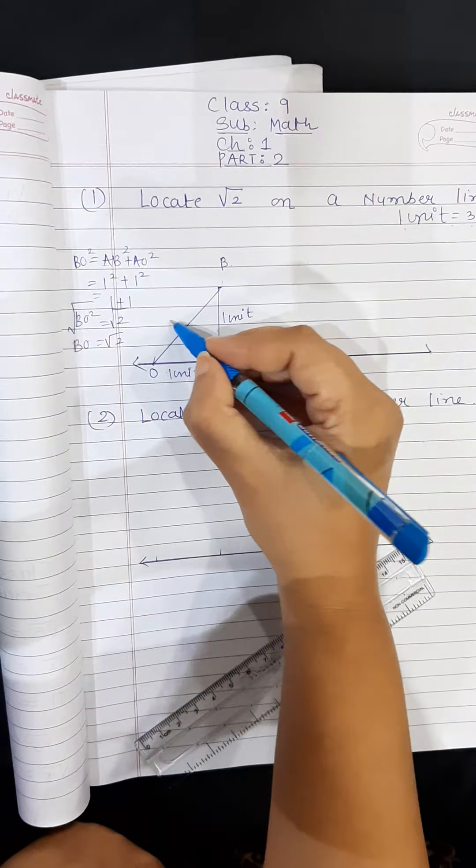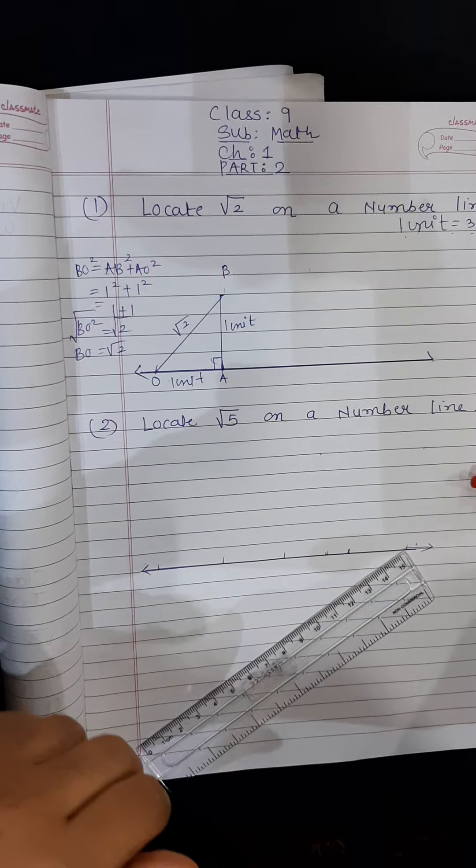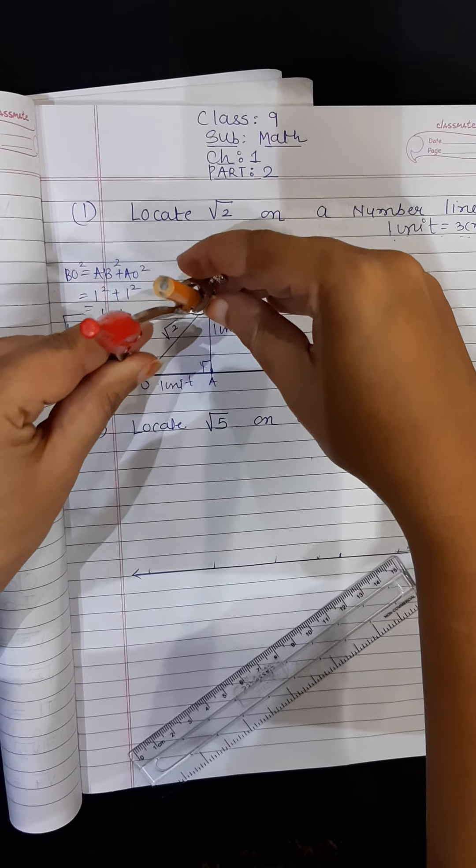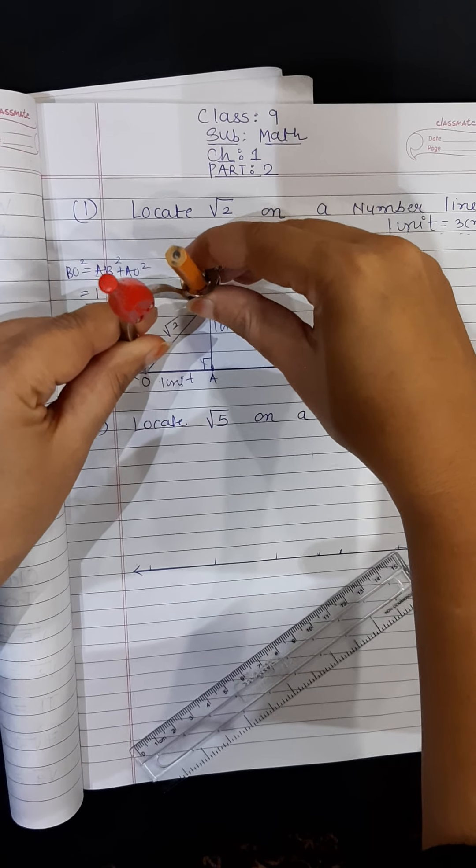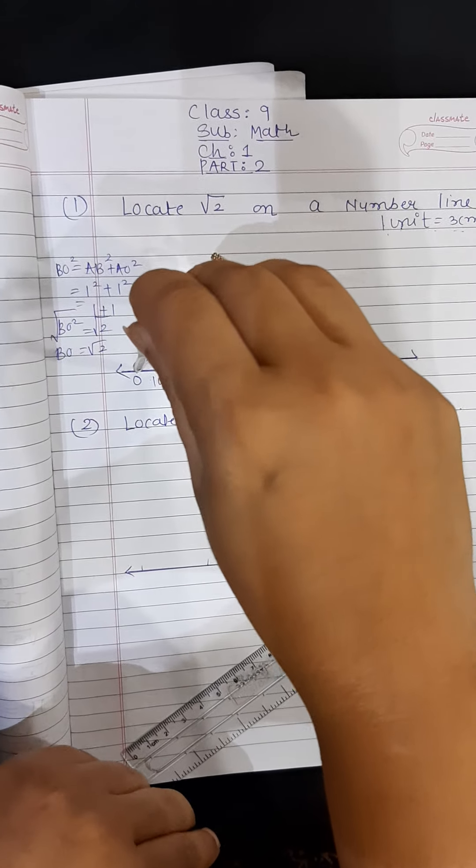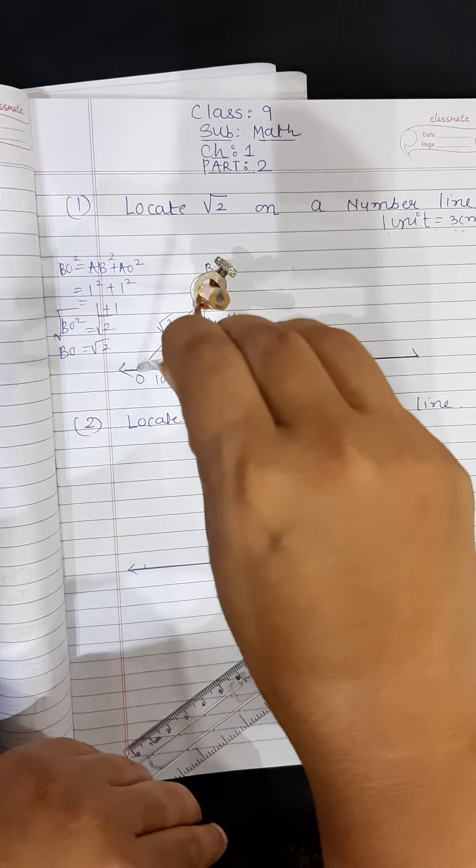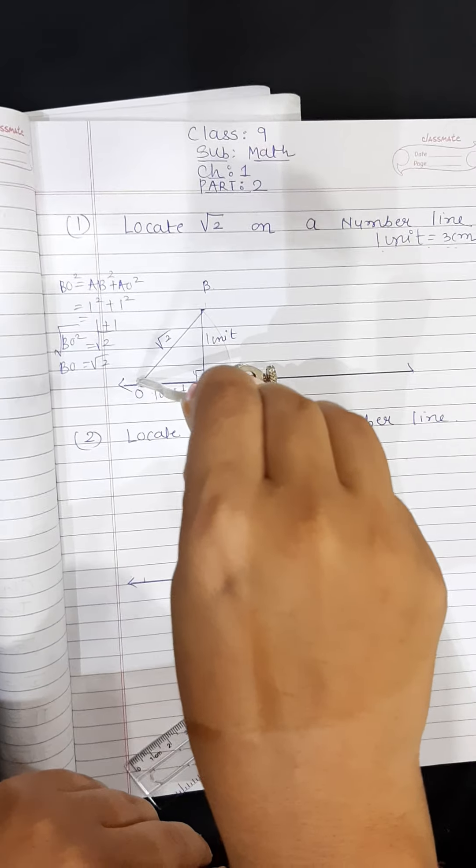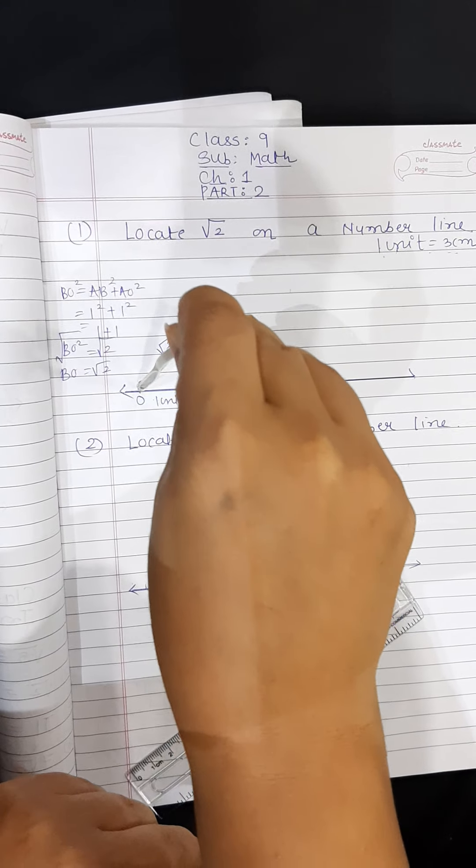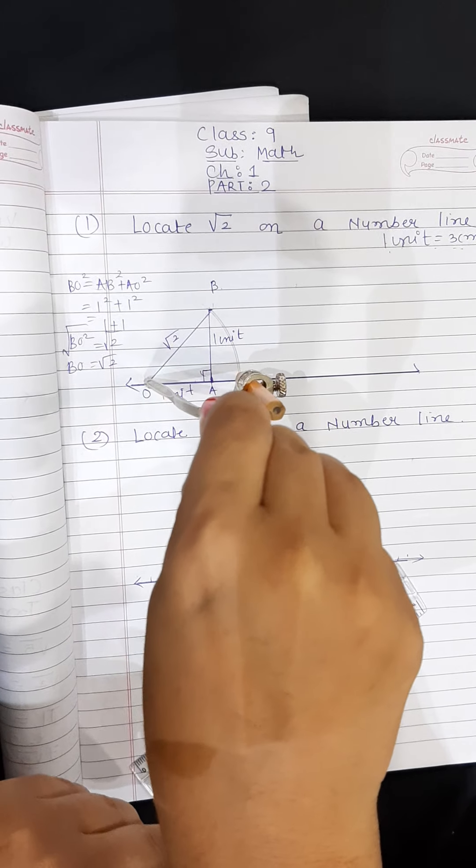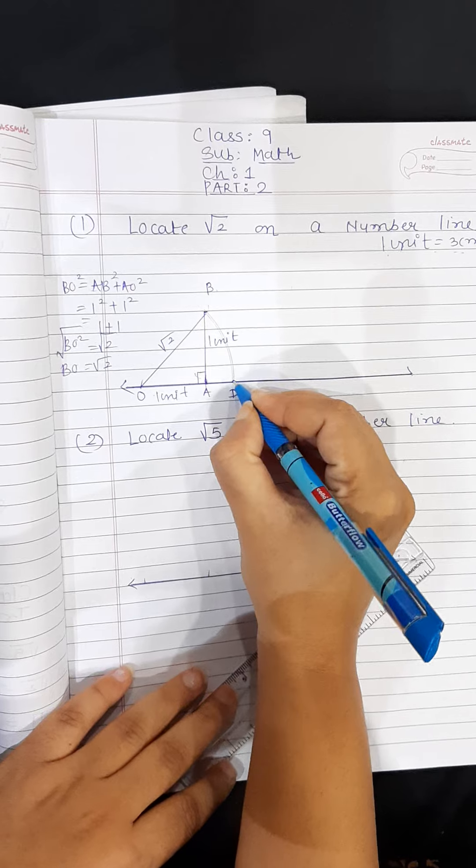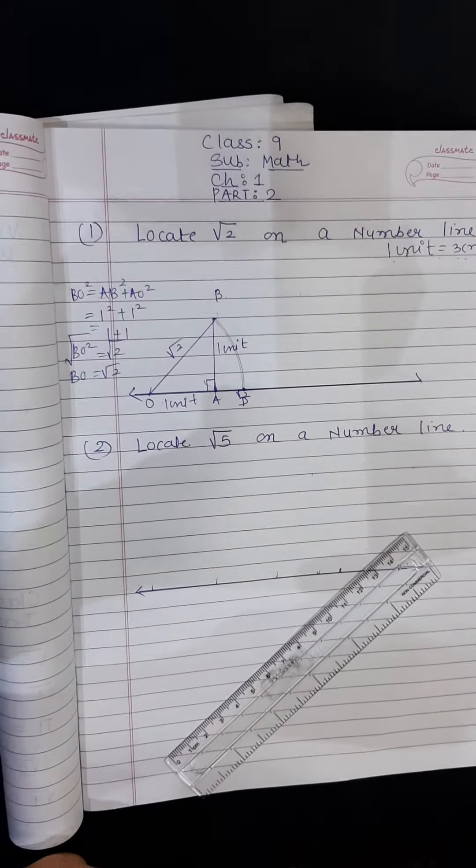So this is your under root 2. Now what you will simply do is you will measure this distance which is root 2. Use the protractor or use the compass which is of nice quality and just simply have one arc here. Now whenever this arc touches your line, mark point D and this is root 2 on the number line.